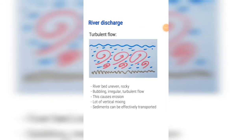Turbulent flow: the river bed is uneven and rocky, which causes a bubbling, irregular and turbulent flow. This is when you see rapids in a river — that is turbulent flow. This causes erosion and there is lots of vertical mixing. Sediments can be effectively transported inside this river.